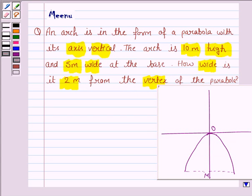Here we are given a parabola with axis vertical, 10 meter high and 5 meter wide. That is, PQ has length 5 meter. Let us now move on to the solution with this information.